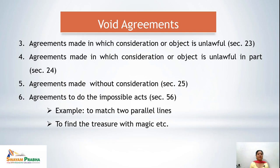Fifth is agreements made without consideration, covered under Section 25. If any agreement is made where there is no consideration, that agreement is a void agreement. Section 25 also includes some exemptions where contracts without consideration are treated as valid — for example, in cases of natural love and affection or completed gifts. But in general, an agreement made without any consideration is considered a void agreement.